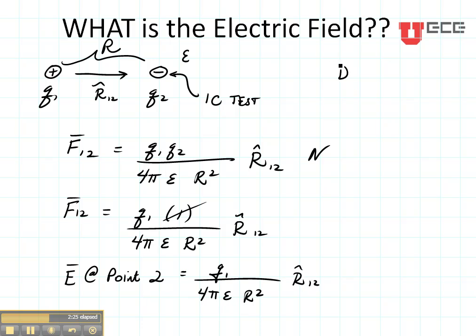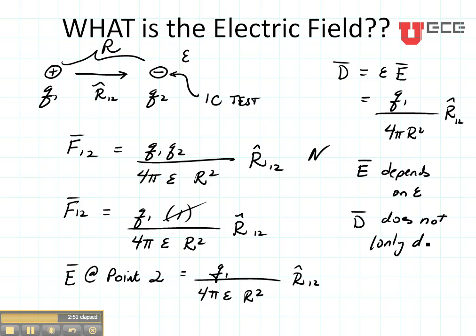The electric flux density is the permittivity times the electric field. And what that means is I'm going to have that be Q1 over 4 pi R squared R from 1 to 2. Notice that the electric field depends on the material, but D does not. D only depends on the charge distribution and of course the distances.